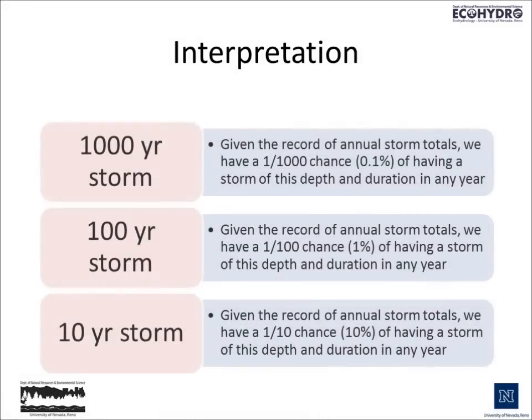A 1,000-year storm is based on the record of annual storm totals, and we have a 1 in 1,000 chance — about 0.1% — of having a storm of this depth and duration in any year. The 100-year storm, as already pointed out, gives us a 1 in 100 chance, about a 1% chance, of having a storm of this depth and duration in any year. A 1-year storm is one we would expect to see, in terms of depth and duration, in any given year.